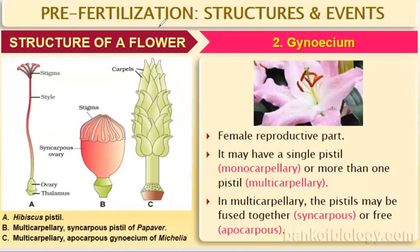We read that there may be unisexual flowers and bisexual flowers. We studied the male part — microsporogenesis, microspore, and microsporangium. Then we studied about the male gametophyte, the formation of male gametes, and also the structure of the pollen grain.